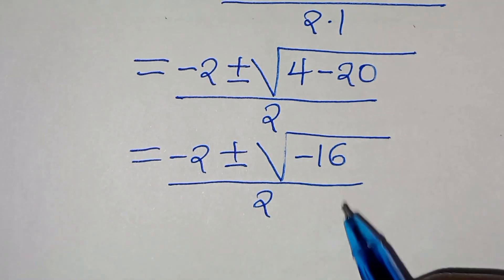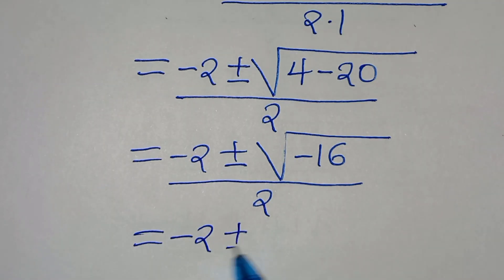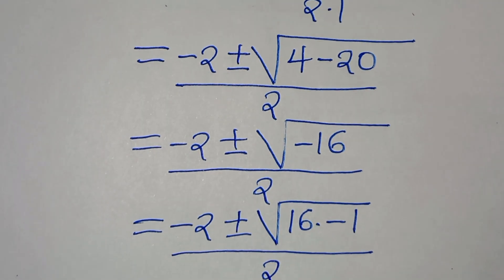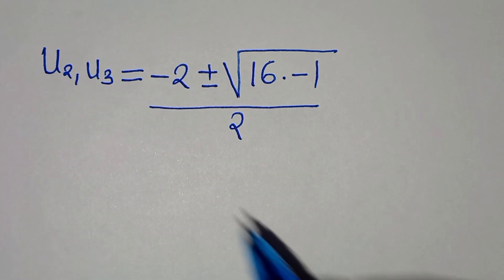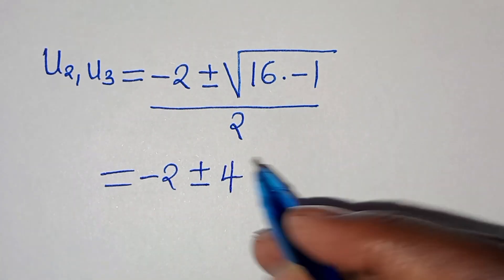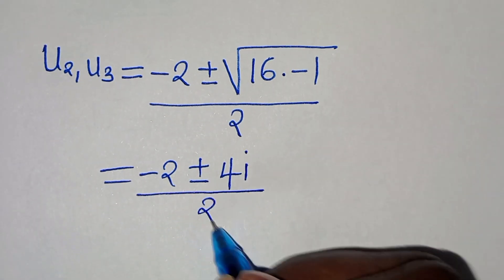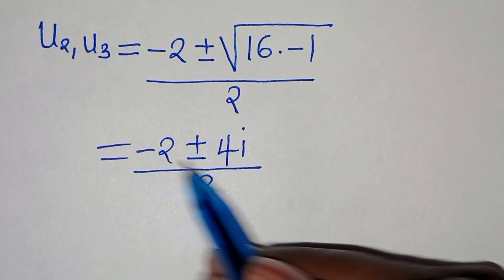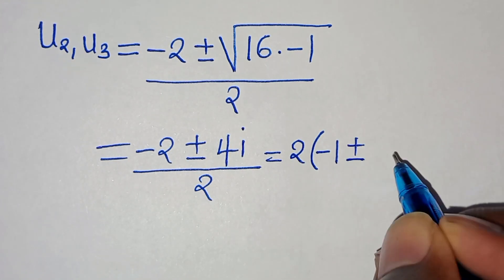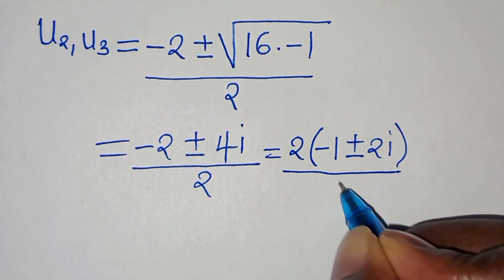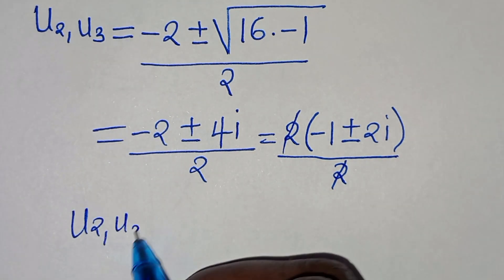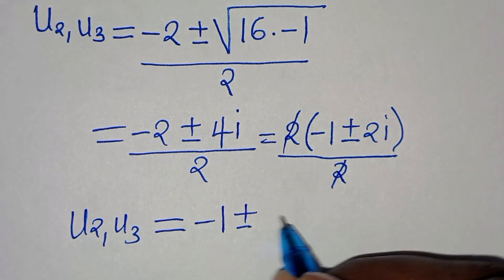The square root of −16 can be written as √16 times √(−1), which is 4i. So we have (−2 ± 4i) / 2. Factoring out 2 in the numerator gives 2(−1 ± 2i) / 2, and simplifying, u₂, u₃ = −1 ± 2i. These are two complex solutions.